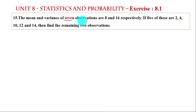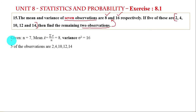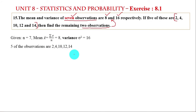We have total 7 observations. The mean and variance are given. In the 7 observations, 5 are known: 2, 4, 10, 12, 14. The mean x-bar equals 8, and variance sigma squared equals 16. Let the two remaining observations be a and b.